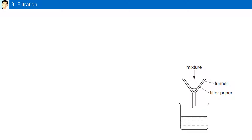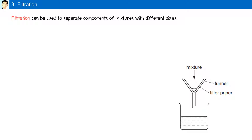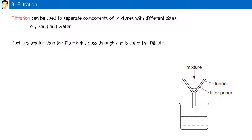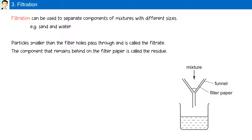Filtration can be used to separate components of mixtures with different sizes. For example, sand and water. Particles smaller than the filter holes pass through and are called the filtrate, while the component that remains behind on the filter paper is called the residue. The physical property used to separate components is particle size.